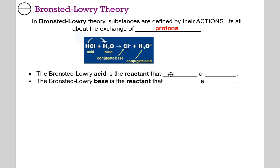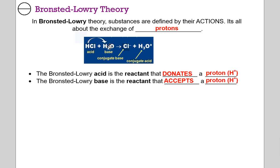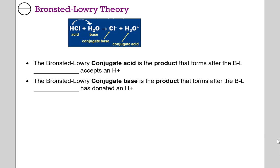The Bronsted-Lowry acid is a reactant that donates a proton. Which reactant is losing a proton? Look before and after — it's hydrochloric acid. It's losing a proton, giving it to water, and leaving behind the chloride ion and then the hydronium ion. The base is the reactant that accepts that proton, so water is accepting the proton here — water is a base, hydrochloric acid is an acid.